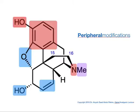So let's take a look at the peripheral modifications. There are quite a number of modifications that can be done on morphine. The ones in red represent those parts of morphine that are intolerant to any modification. In other words, if you change the 3-OH, the aromatic ring, and the amino group, it would result in the loss of analgesic activity.